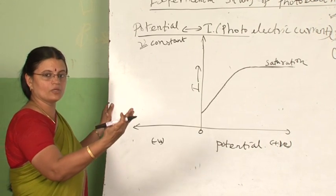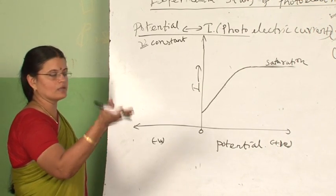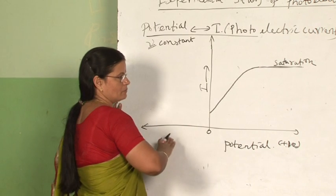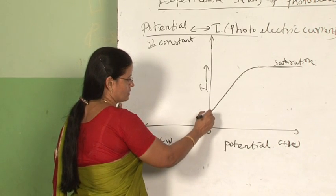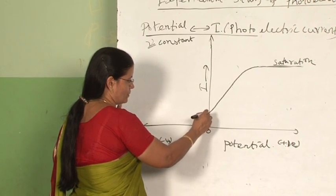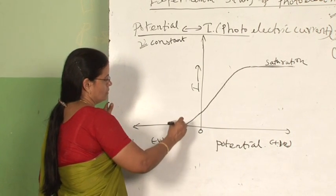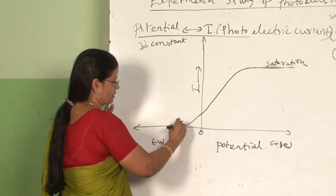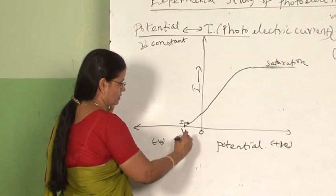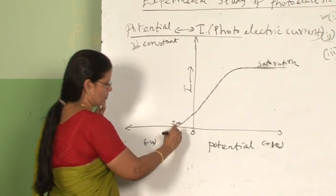When the collector plate Q is kept at lower potential compared to the emitting plate P, it is observed that the photoelectric current rapidly decreases and becomes zero. The current becomes zero at a particular potential called stopping potential.